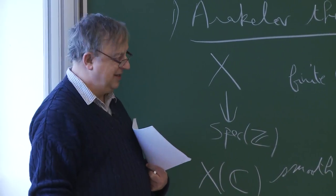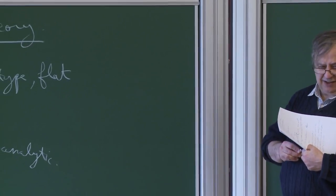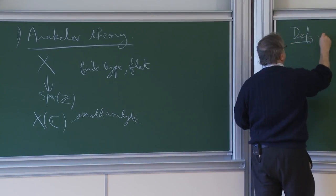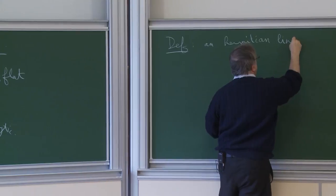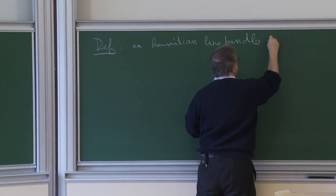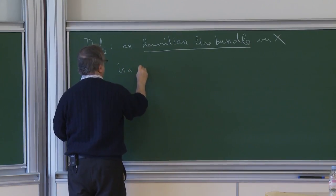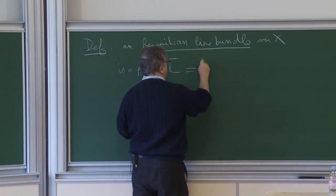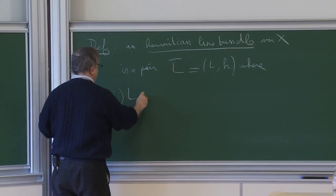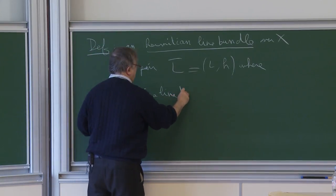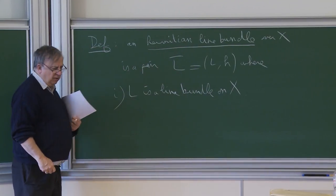We assume that the generic fiber is smooth. Under this hypothesis, we talk about Hermitian line bundles on X. A Hermitian line bundle over X is a pair L-bar equals (L, H), where L is an algebraic line bundle on X — in other words, an invertible O_X module.